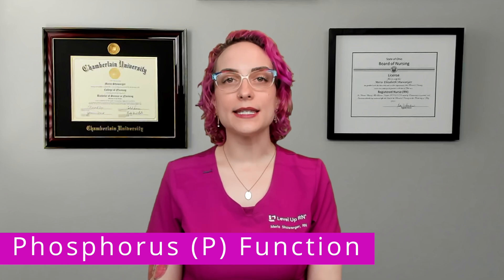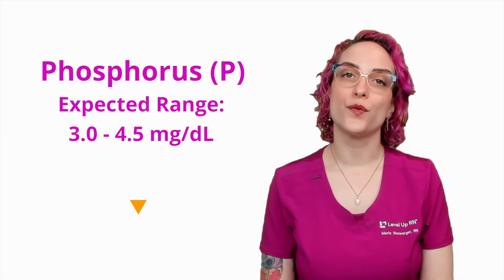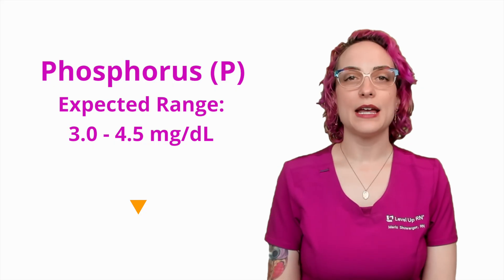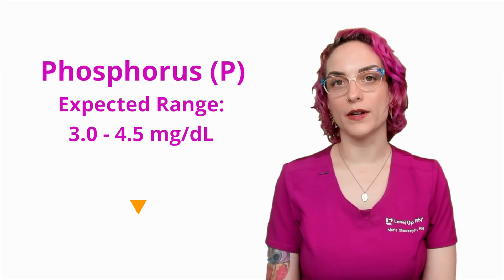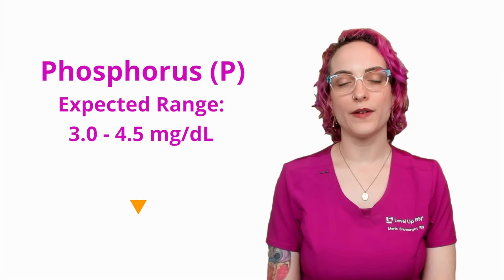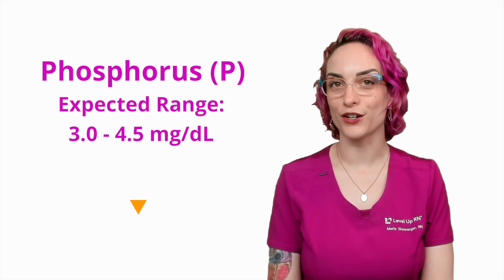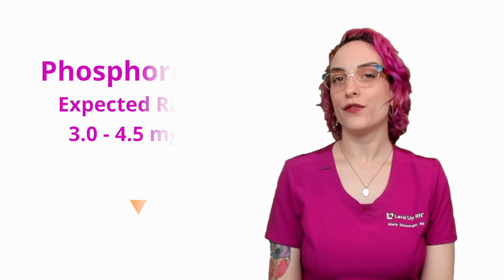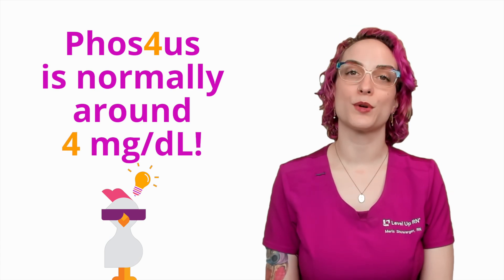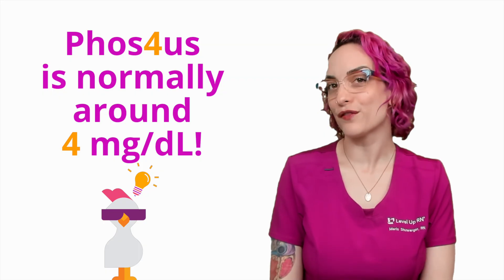What is the expected range for phosphorus? Phosphorus is going to be 3.0 to 4.5 milligrams per deciliter. That is a pretty narrow window for a normal value, and when you have a narrow value like that it can be kind of difficult to remember. But we do have a cool chicken hint to help you remember: phosphorus is normally around 4 milligrams per deciliter, which helps you remember that you are in that 4 range for phosphorus.